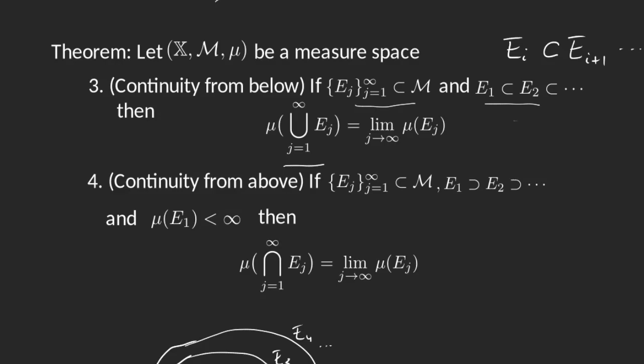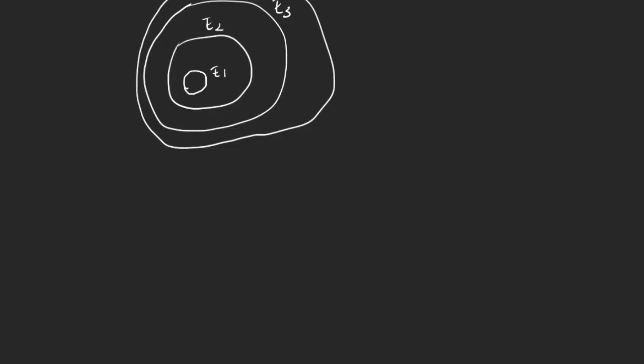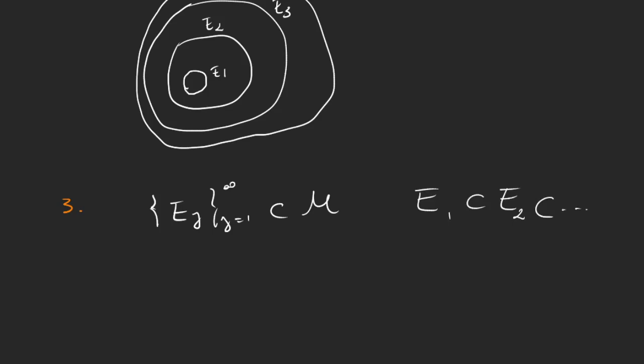The biggest set of all is when n tends to infinity — e sub infinity would be the greatest one, the one that contains all the rest. So the union is actually that bigger and bigger set, and the measure of the union has to be the limit of the measures when j goes to infinity. Now let's prove property 3. We grab a sequence e sub j from j equals 1 to infinity — this sequence is countable, with countably many elements in our sigma algebra m — and it satisfies e1 contained in e2, and so on.